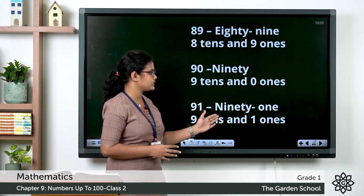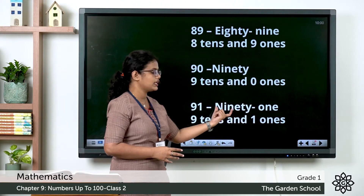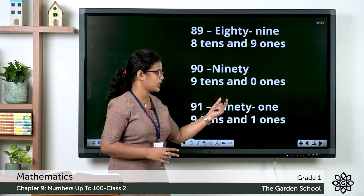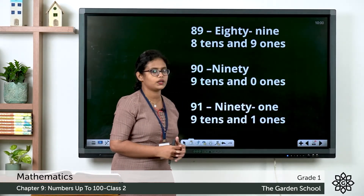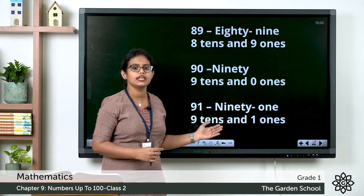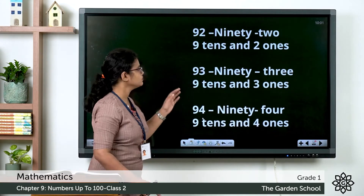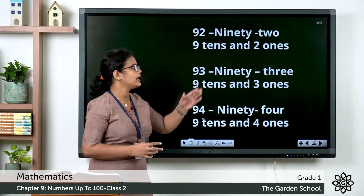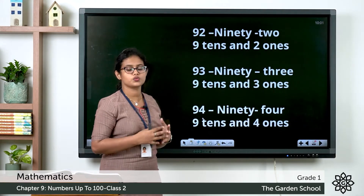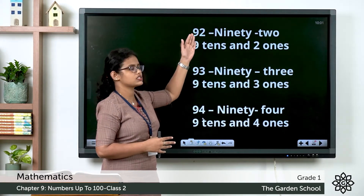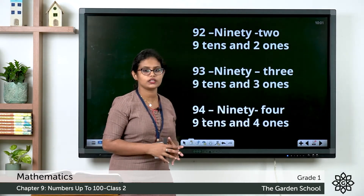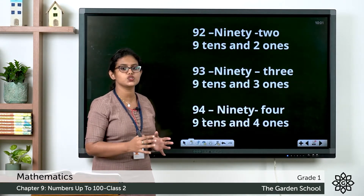After 90 comes 91. You have to write the number name for 90 and then write 1, so that makes 91. So 9 tens and 1 one makes 91. The next number after 91 is 92. What is the place value of 2? 1s. What about 9? 10s. So 9 tens and 2 ones makes 92.